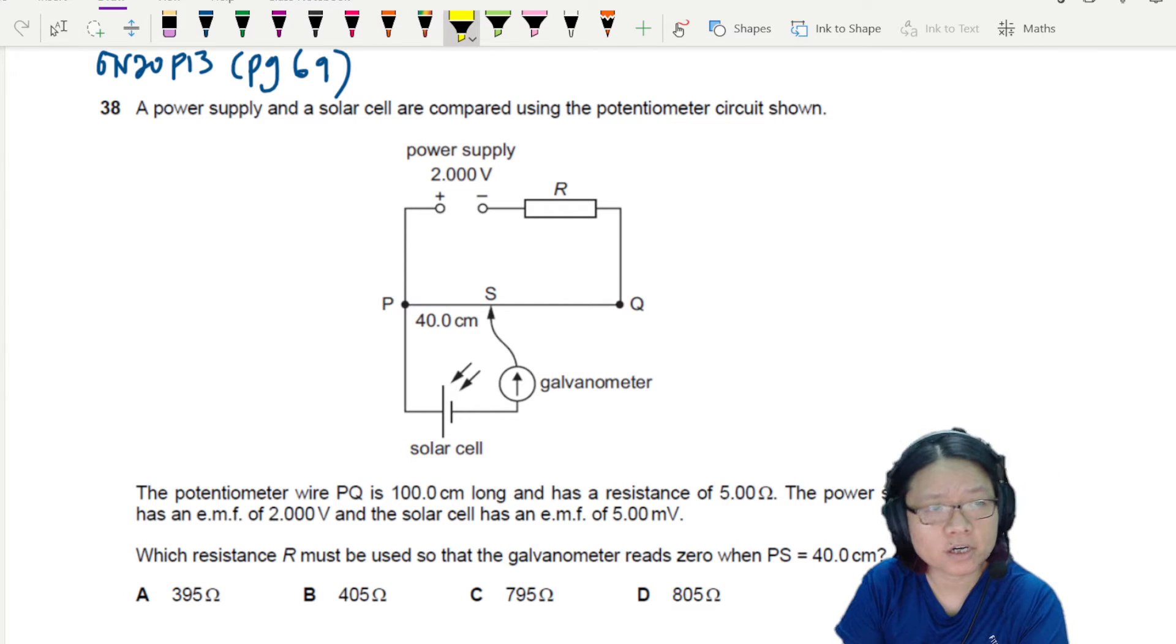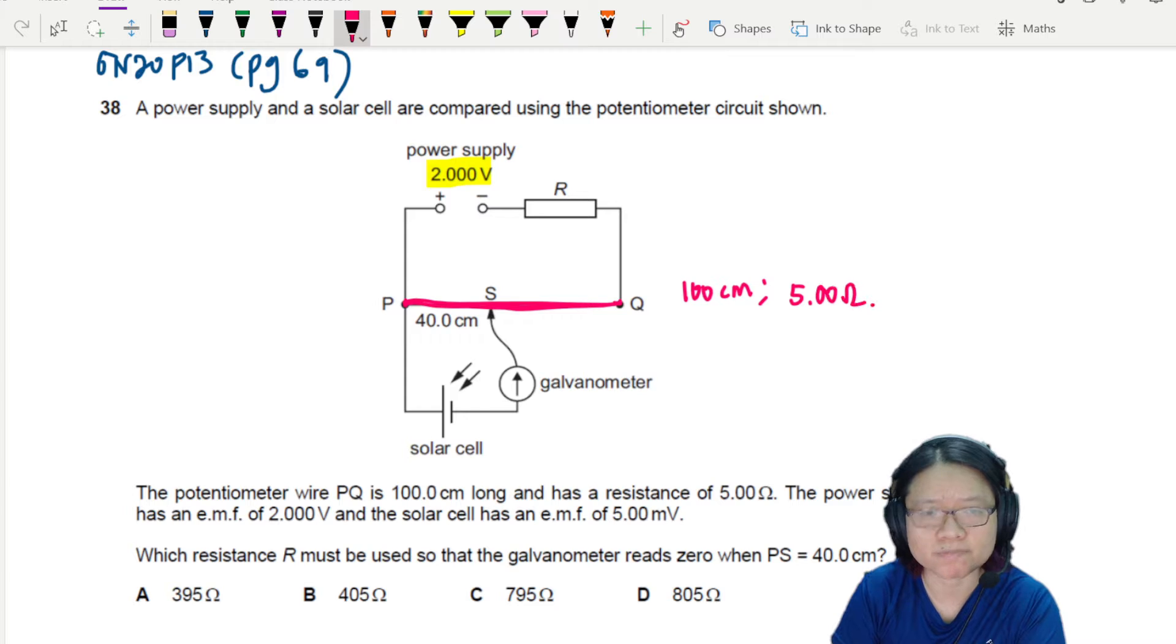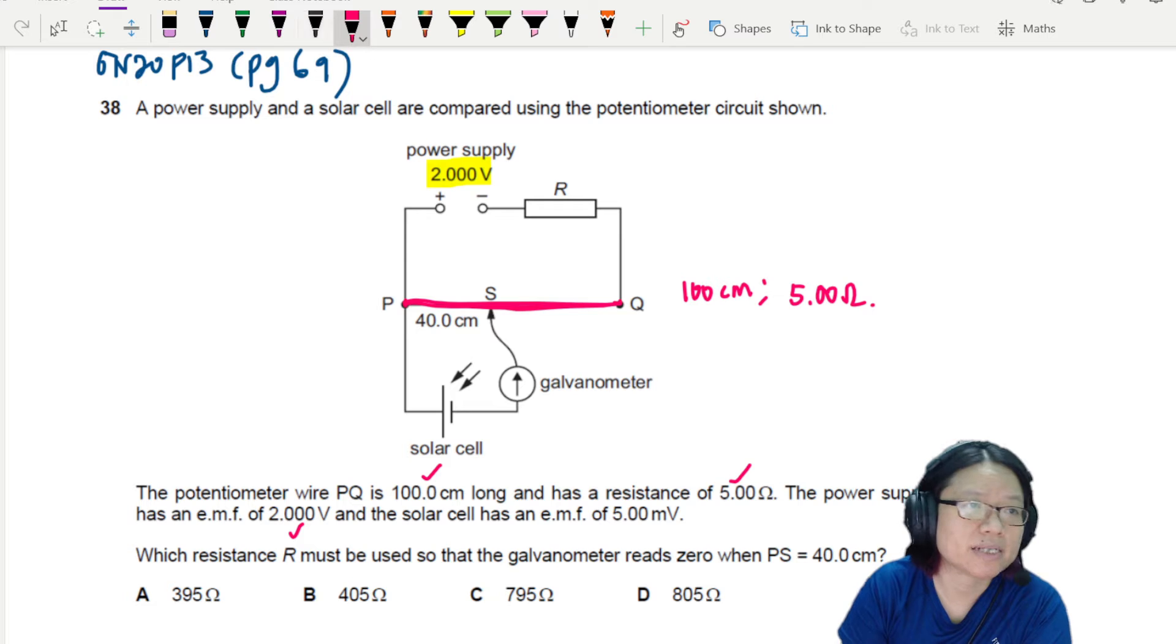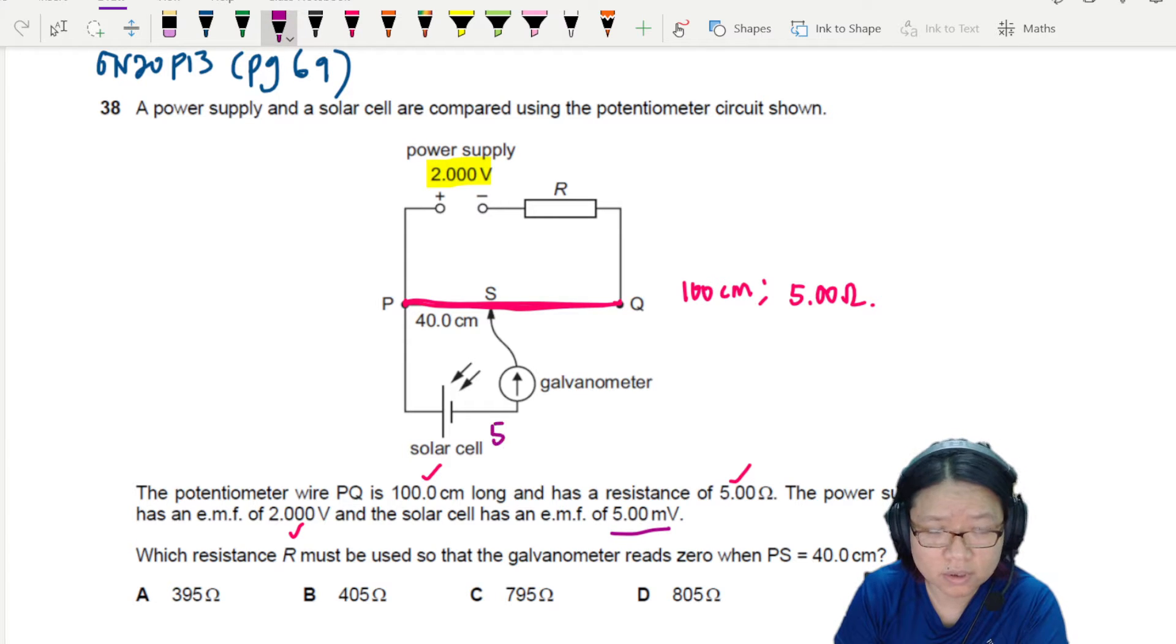Here we have a power supply of 2.000 volts. There are so many significant figures and also very precise. The potentiometer wire PQ - always remember that when it comes to a potentiometer, the wire is your main conductor. We know that this wire is 100 cm long and has a resistance of 5.00Ω. The power supply has an EMF of 2.000 volts and the solar cell has an EMF of 5.00 millivolts.